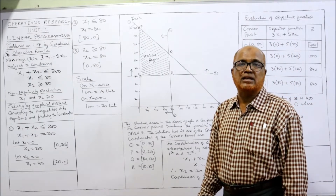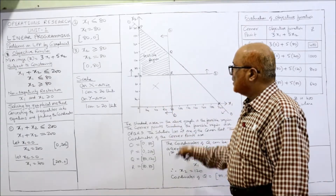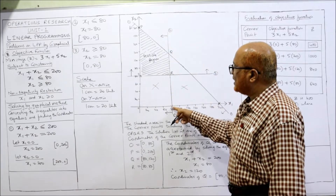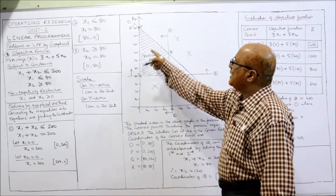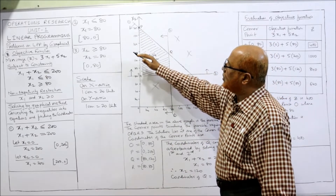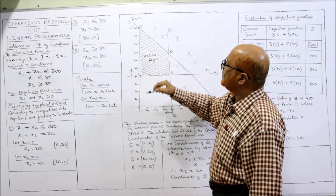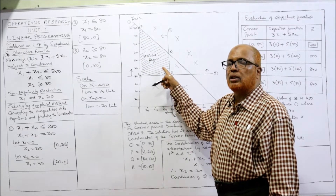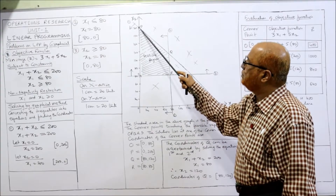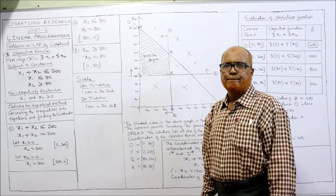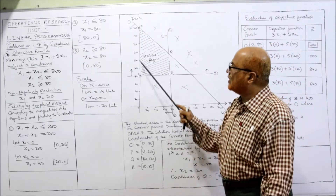Now we find the feasible region. The third line says feasible region is upward, so below it is not feasible. The second line says feasible region is left, so the right side is not feasible. The first line says feasible region is downward, so above it is not feasible. Finally, the bounded region satisfying all constraints is the feasible region or solution space. The corner points touching the feasible region are O, P, Q, R — our solution lies at one of these corner points.